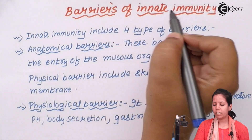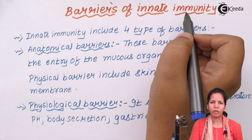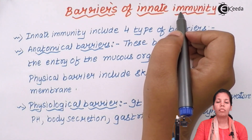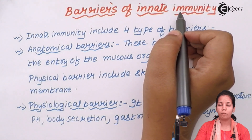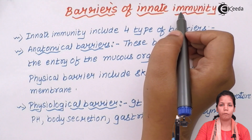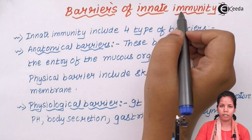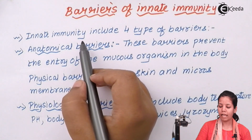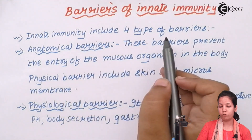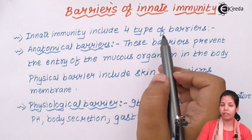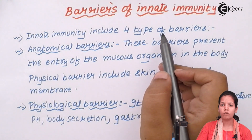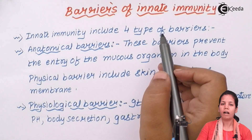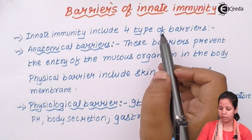Barriers of innate immunity — we can say in a simple manner, the walls that actually form the foundation of innate immunity. Innate immunity has basically four different kinds of barriers present in every individual, and these four different kinds of barriers work in an alternative form to allow that immunity to work properly.